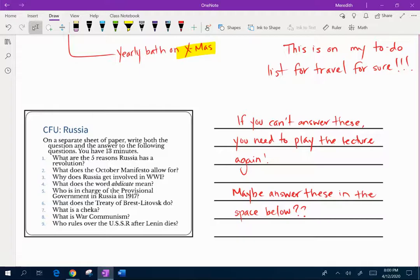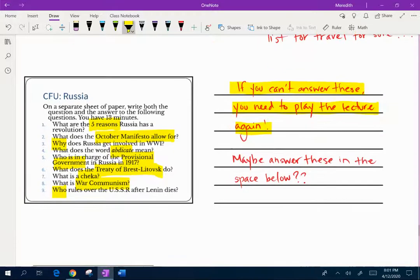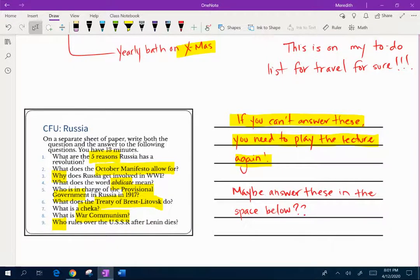Now this last slide, these are always on the lectures. I just never do them with you guys. But go through these. If you can't answer these, then you either need to listen to my voice again, or you need to reread the notes. Just make sure you can tell me five reasons that Russia is vulnerable for a revolution. What does the October manifesto allow for? Why is Russia getting involved in the war? What does the word abdicate mean? Who's in charge of the provisional government? What does the Treaty of Brest-Litovsk do? What's a Cheka? What's war communism? And then obviously the most important one of all is who is in charge after Lenin dies? I miss you guys. I'm sorry I'm lecturing to you in this capacity. I hope this was helpful and more time effective. Hope you have a really good week. Talk to you guys later. Bye.